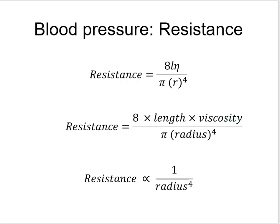Performance-enhancing drugs that increase red blood cell count, like EPO, may also increase viscosity to a meaningful degree if taken to an extreme. But under normal physiological circumstances, we do not manipulate viscosity to increase resistance and blood pressure. Just like we don't manipulate blood vessel length under normal conditions.